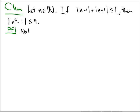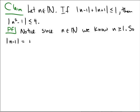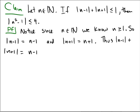Notice: since n is a natural number, we know that n is always greater than or equal to 1. So the absolute value of n minus 1 equals n minus 1, and the absolute value of n plus 1 equals n plus 1. Thus, the absolute value of n minus 1 plus the absolute value of n plus 1 equals n minus 1 plus n plus 1, which equals 2n.